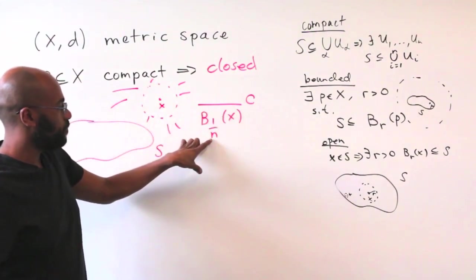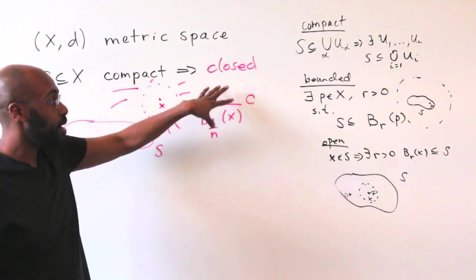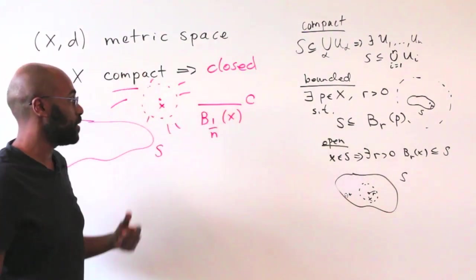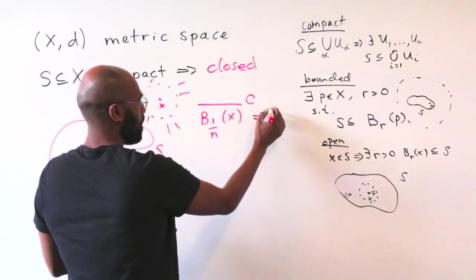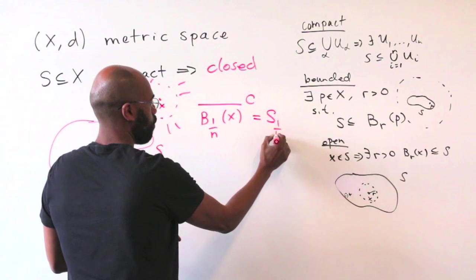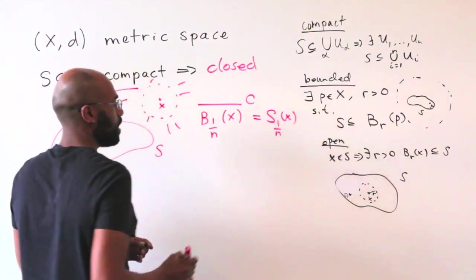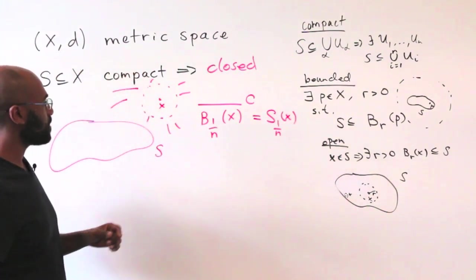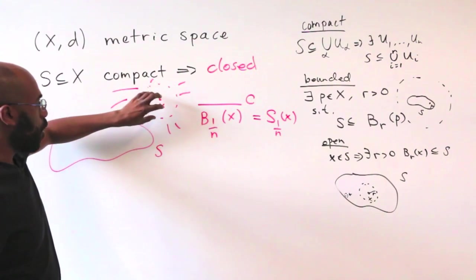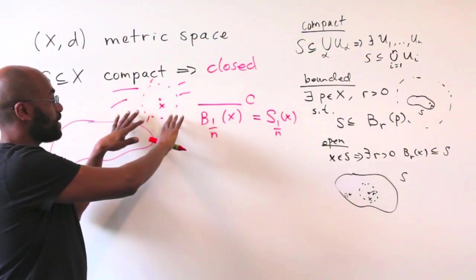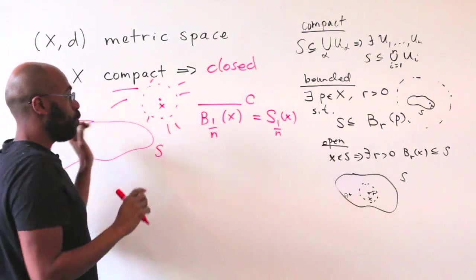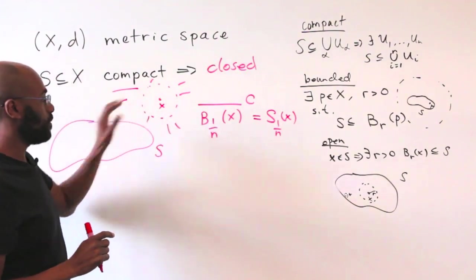The open ball of radius 1 over N is open. We closed it, that's closed, and the complement of that is consequently open. So this thing is an open set. Maybe let's call it S sub 1 over N of X. And we think about S sub 1 over N of X as being this open set that contains all the points that are radius greater than 1 over N from the point X.